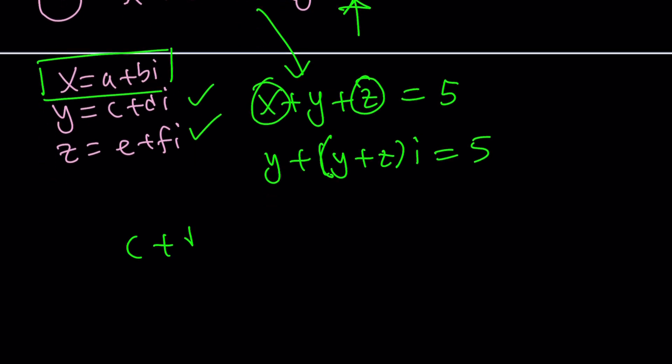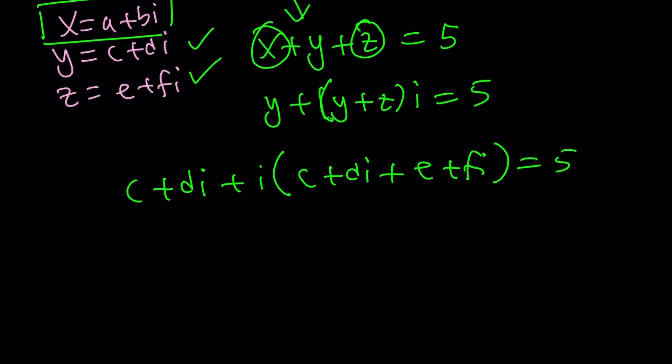y is c plus di, and then i times y plus z, which is c plus di plus e plus fi. The whole thing is 5. Now here, a, b, c, d, e, f are all real because that's how complex numbers are defined. So let's go ahead and put the real parts together.